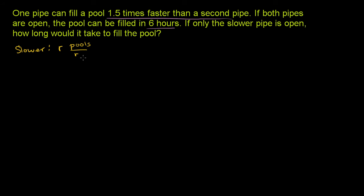So if its rate is R pools per hour, R for rate, what is the faster pool's rate? The faster pool's rate is going to be 1.5 times R. It's one and a half times faster, it has one and a half times the rate. So it's going to be able to do 1.5R pools per hour.